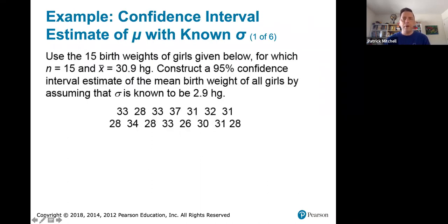So here's an example. Use the 15 birth weights of girls given below for which N equals 15 and x bar equals 30.9 hectograms. Construct a 95% confidence interval estimate of the mean birth weight of all girls by assuming that sigma is known to be 2.9 hectograms. It was actually very nice of them to tell me x bar because since they've given me all the sample data we could have figured that out. I've actually seen many problems where they give you the sample data and they don't give you either x bar or in that case it would be S, and so you have to calculate both. I'm not sure if your book does that but that is a thing that I see done.